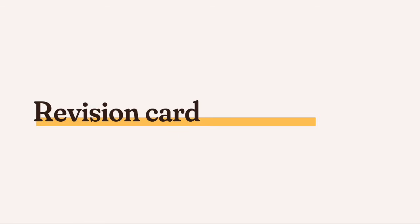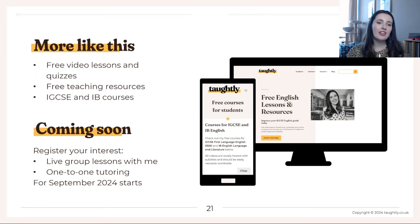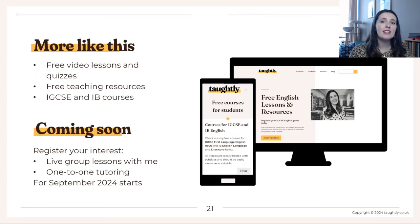Let's summarise today's key takeaways on our revision card. For short answer comprehension questions 1A to E: unless it says 'using your own words,' directly copy from the text; skim and scan looking for precise answers without wasting time analysing in detail; the number of marks equals the number of separate points you must make; and when defining words, do not reuse that word in your own definition. I hope this was useful — find more at taughtleet.co.uk including the full free IGCSE course for Paper One and Paper Two.